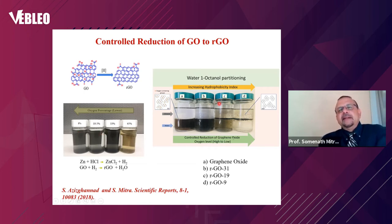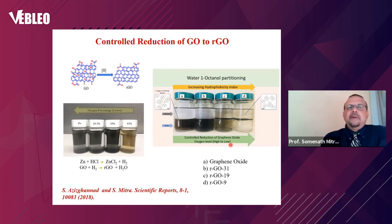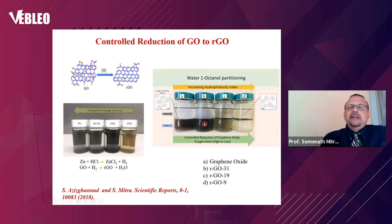The way we achieve controlled reduction is using nascent hydrogen: we take an acid solution, add metallic zinc, which generates hydrogen, and that hydrogen reduces the graphene oxide. By controlling the amount of zinc, we control the amount of hydrogen formed and therefore the level of reduction. We published this in Scientific Reports. One key demonstration is octanol–water partitioning: graphene oxide at high oxygen content stays entirely in the aqueous phase, but as we reduce it progressively, more partitions into the octanol phase.